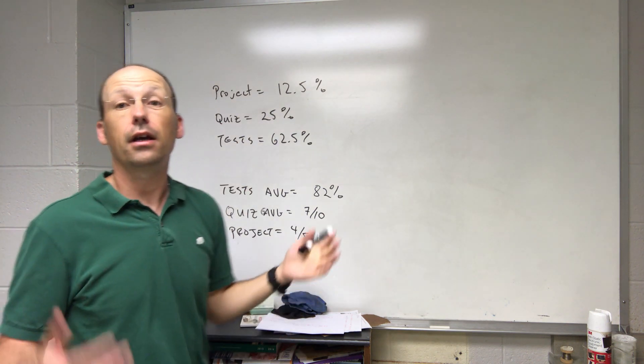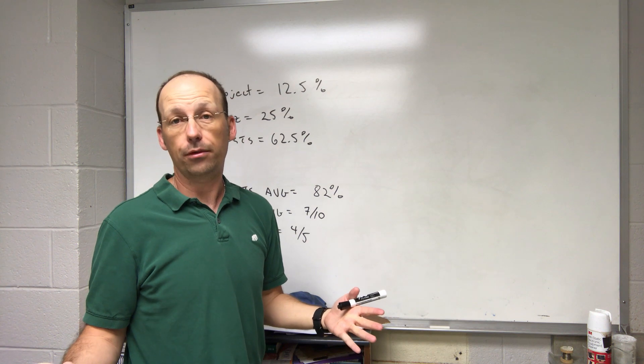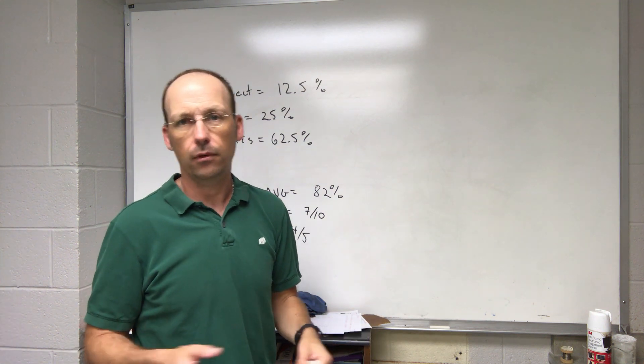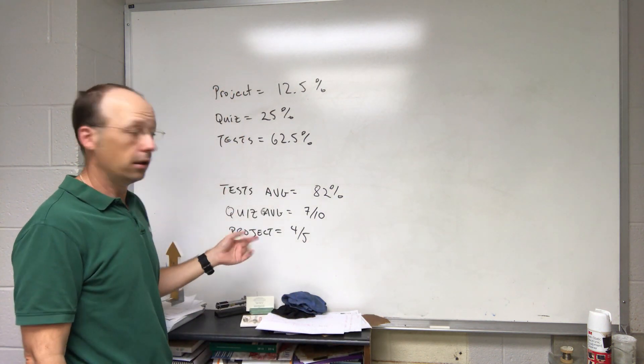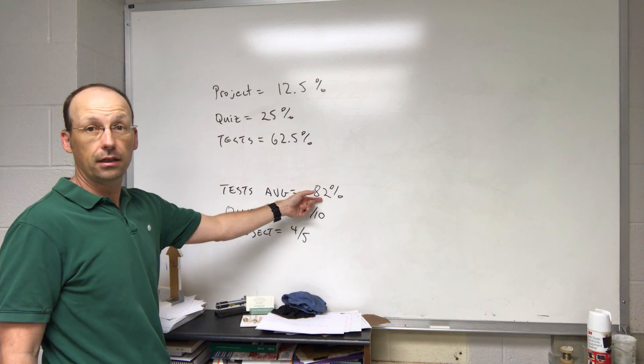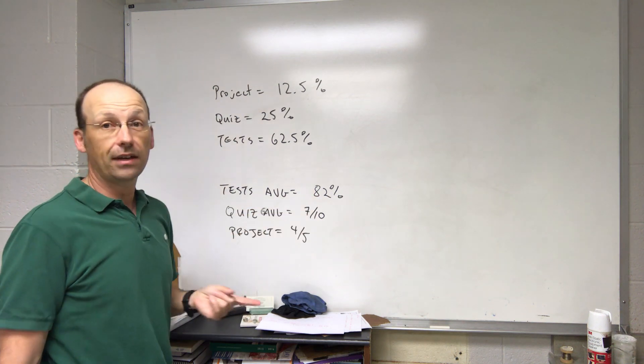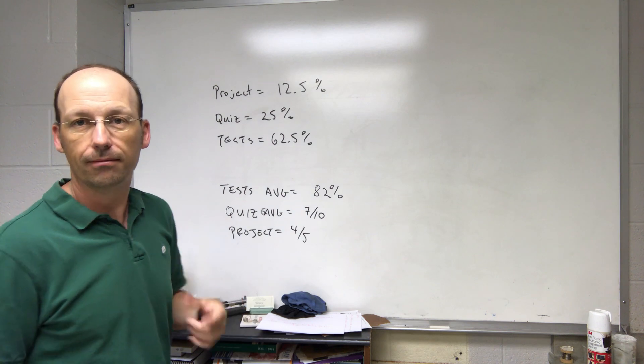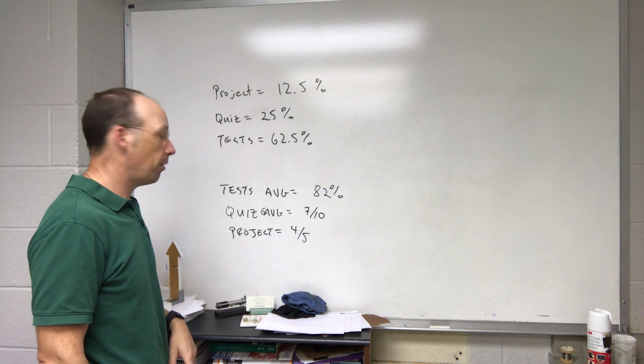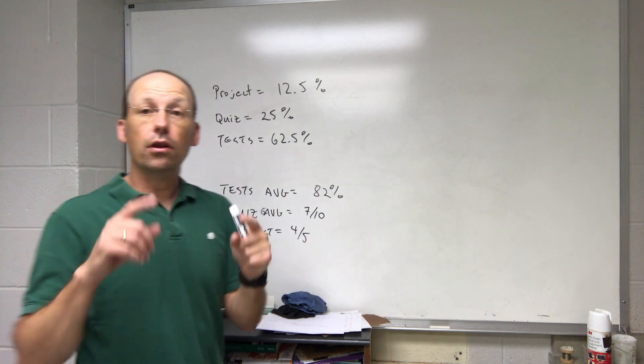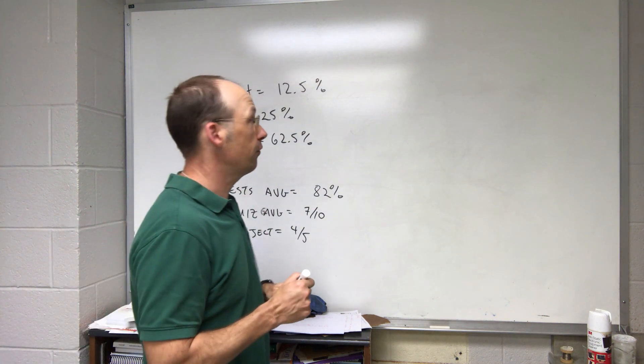And then I have the quiz worth 25%, it was 200 grams. And then the test is 62.5%. And if you add these all up you get 100%. The course should add up to 100% unless you're not complete. Okay, and then here's what you did. You have your test average is 82%. Your quiz is 7 out of 10, I threw that in there just to be fun. And then your project is 4 out of 5.